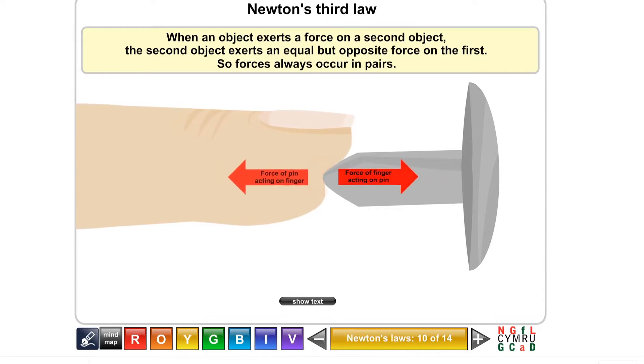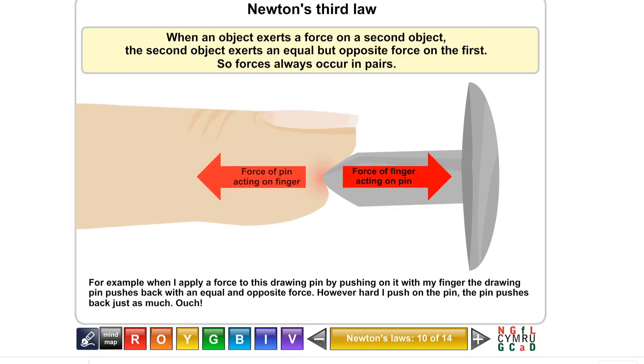So you can see, the harder that you push with your finger on the drawing pin, the harder the drawing pin pushes back on you. You can think about that in real life. If you just barely touch the drawing pin, it's not going to hurt. But the harder you push it, the more it's going to push back on you and the more it will hurt. As it says underneath, for example, when I apply a force to this drawing pin by pushing on it with my finger, the drawing pin pushes back with an equal and opposite force. However hard I push on the pin, the pin pushes back just as much. Ouch!